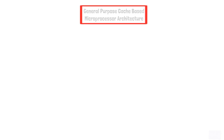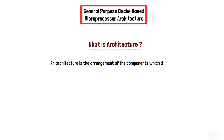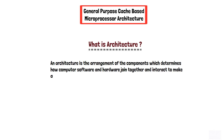In this video you will learn about the general purpose cache-based microprocessor architecture. But before that, let's understand what architecture is. An architecture is the arrangement of the components which determines how computer software and hardware join together and interact to make a computer work.